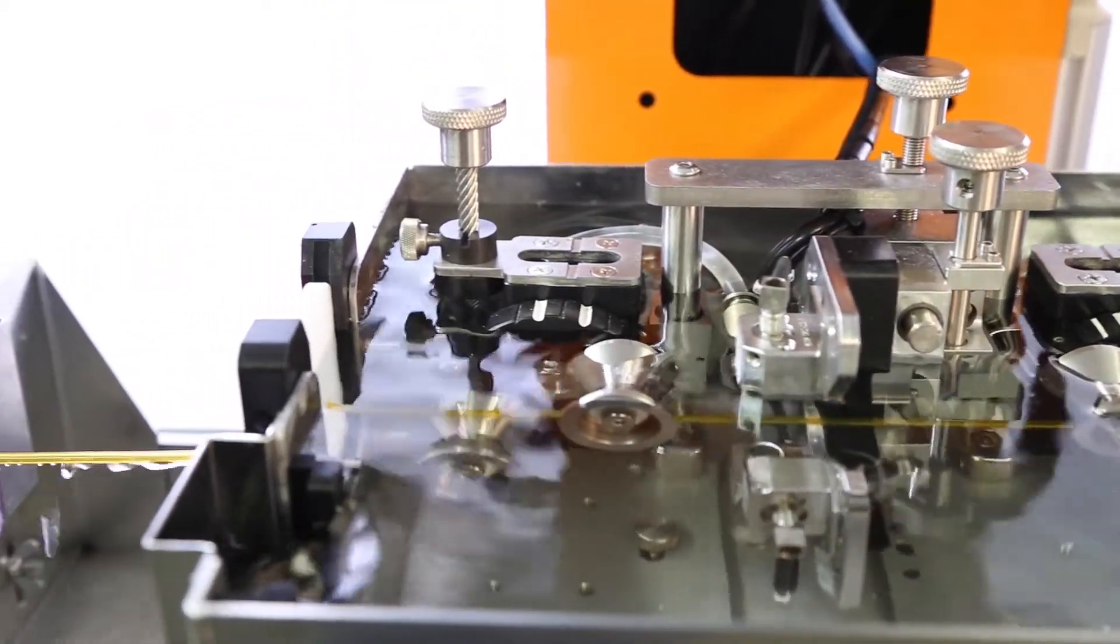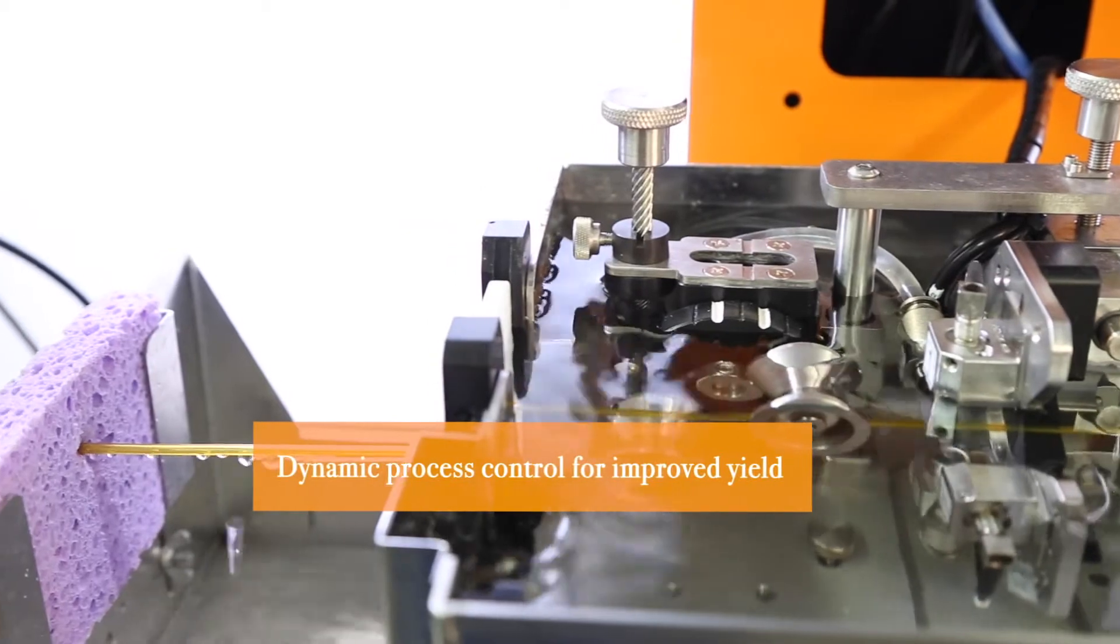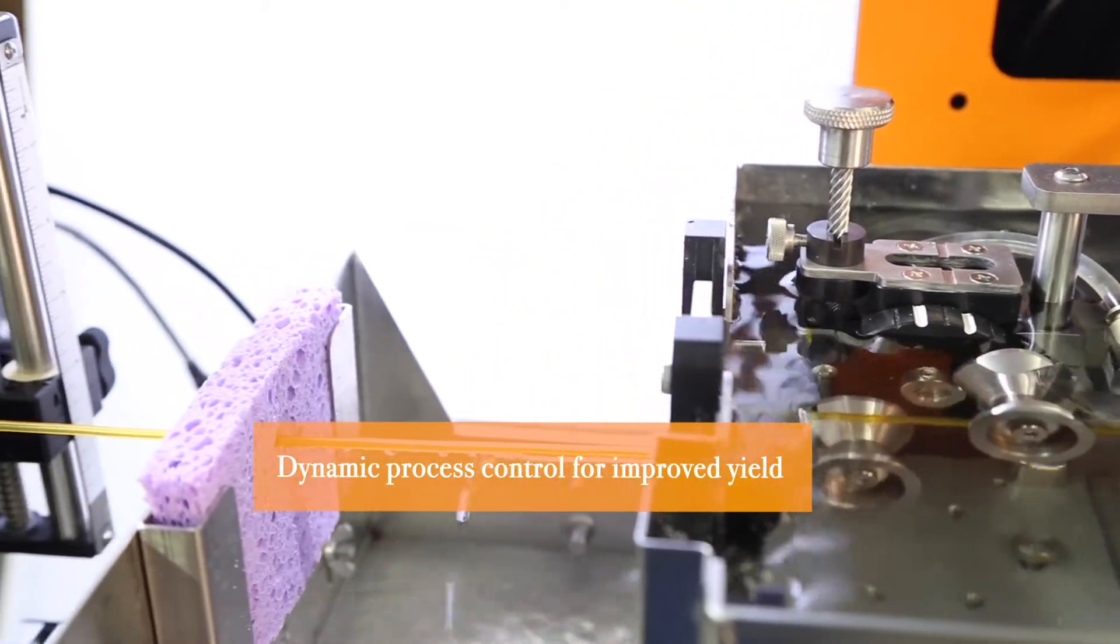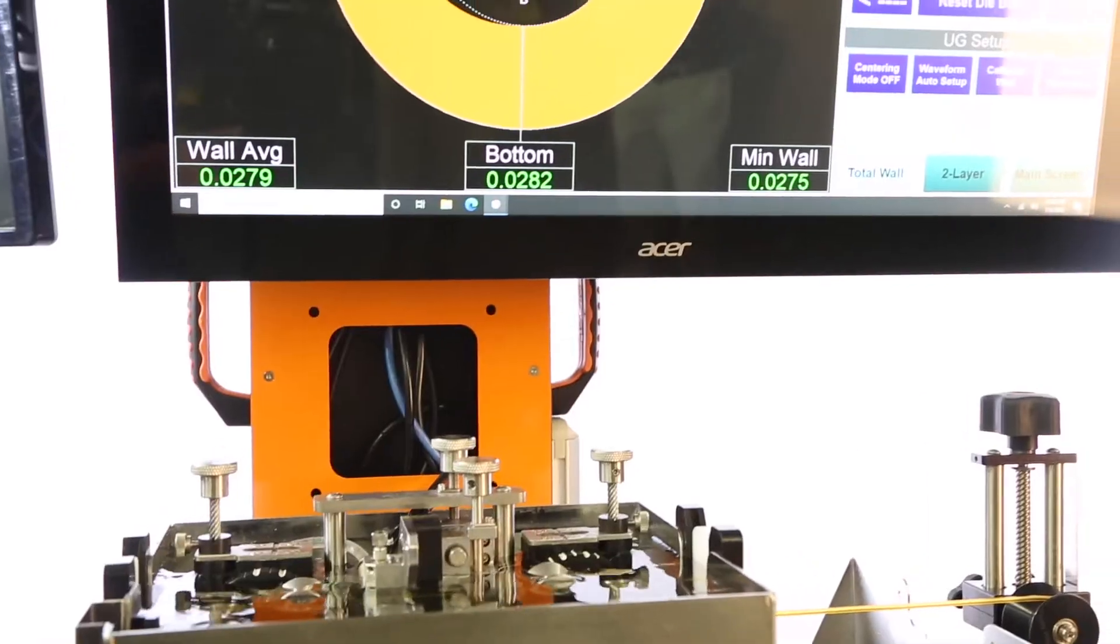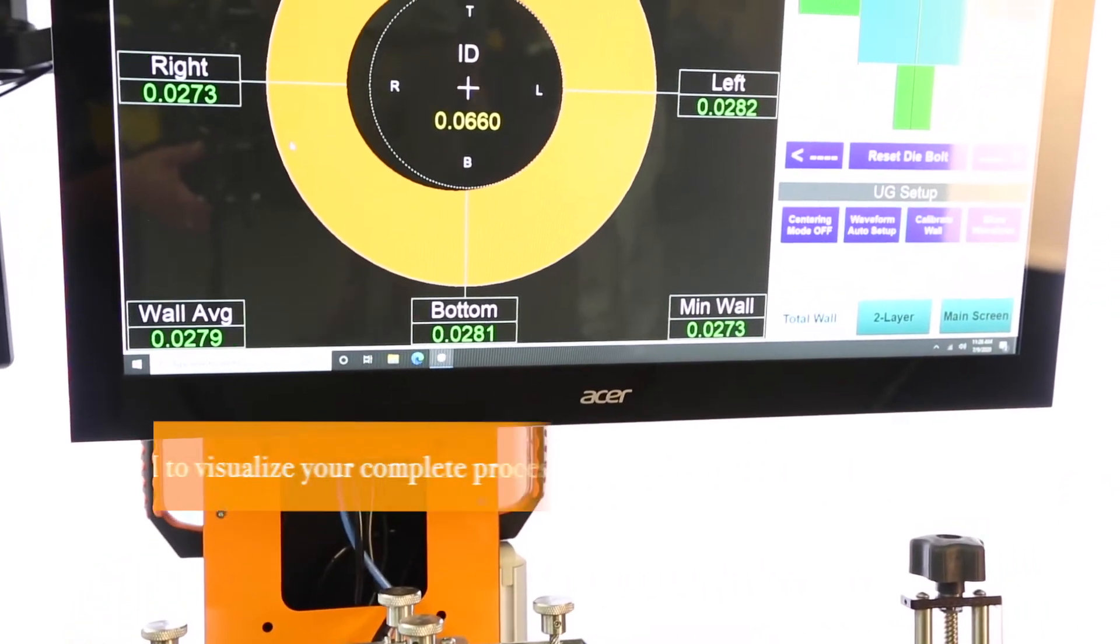This enables users to easily visualize dynamic tube dimensional process variables and make manual or automatic adjustments to improve quality and production yield to save time and money.